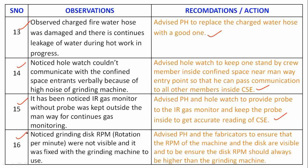Observation 16: Noticed the grinding disc RPM was not visible as it was fixed to the grinding machine before use. Recommendation: Advise the permit holder and fabricator to ensure that the RPM of both the machine and the disc are visible, and to ensure the disc RPM is always higher than the grinding machine RPM.